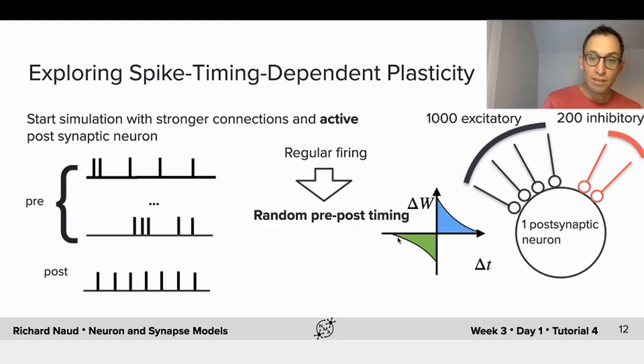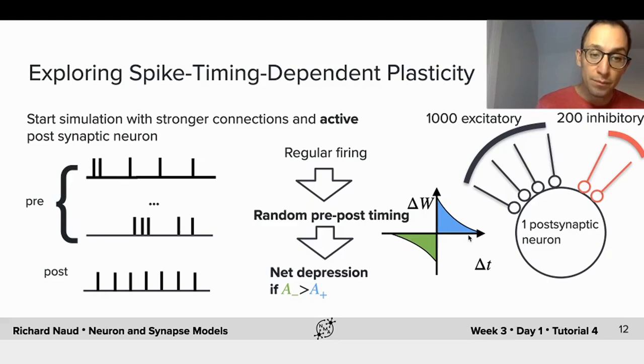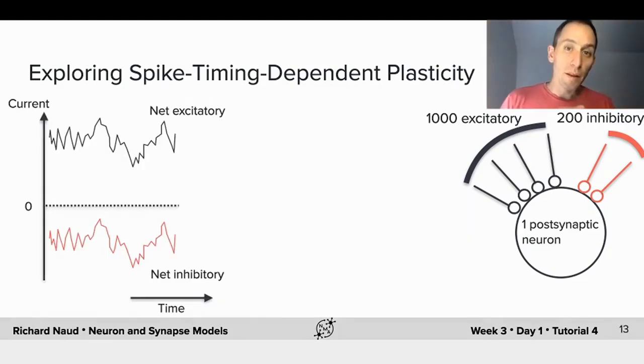So we can consider the association between pre- and post- to be random. So regular firing means that we're sampling randomly from this coincidence window. So if there's just as much LTP as there is LTD, we should get no net changes in the synaptic weights. But if we choose that there is a net depression, that allows the system to do some type of self-organization. And it's quite interesting. The synaptic weight will give net depression. It will reduce the net drive to the neurons. So let me explain this in more detail.